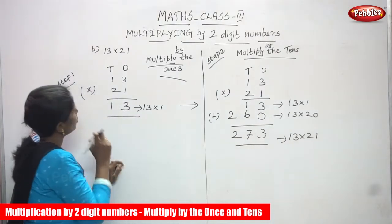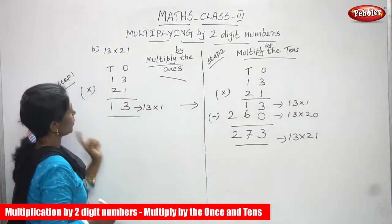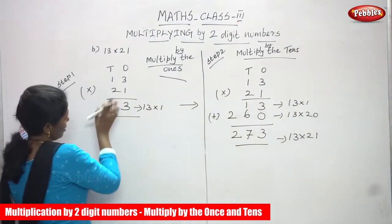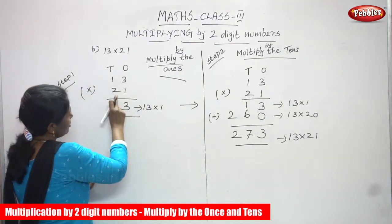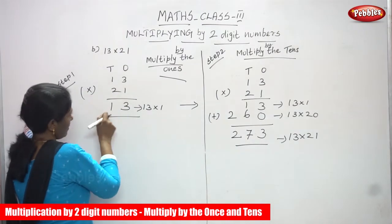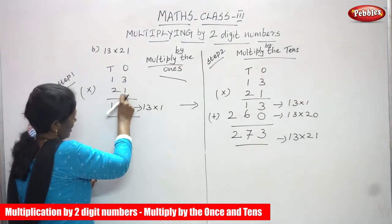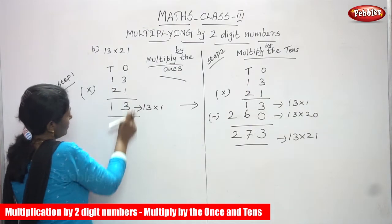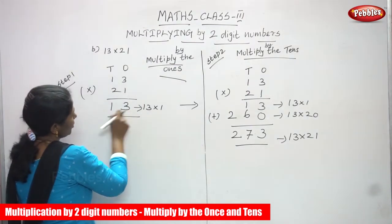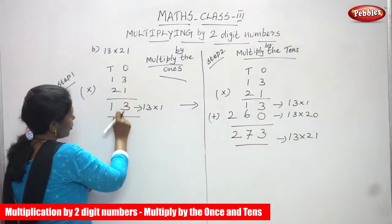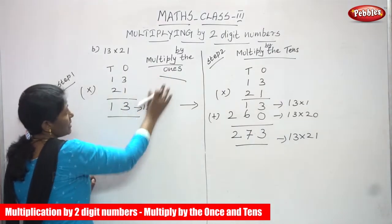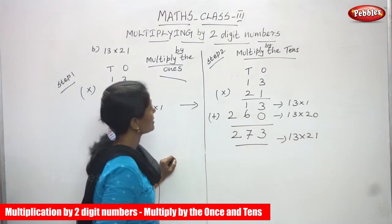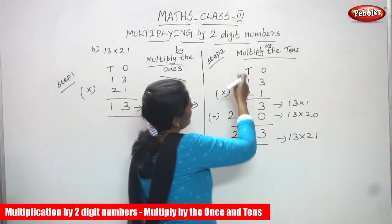I'll repeat once again. Step 1 — multiplying by the ones. 13 into 21: first write the place value, then write the numbers according to place value. In the ones place the number is 1, so 1 is going to multiply by 13. You get 13 — that is, 1 times 3 is 3 and 1 times 1 is 1. Step 1, multiplying by the ones, is over. Now we go to Step 2, multiplying by the tens.